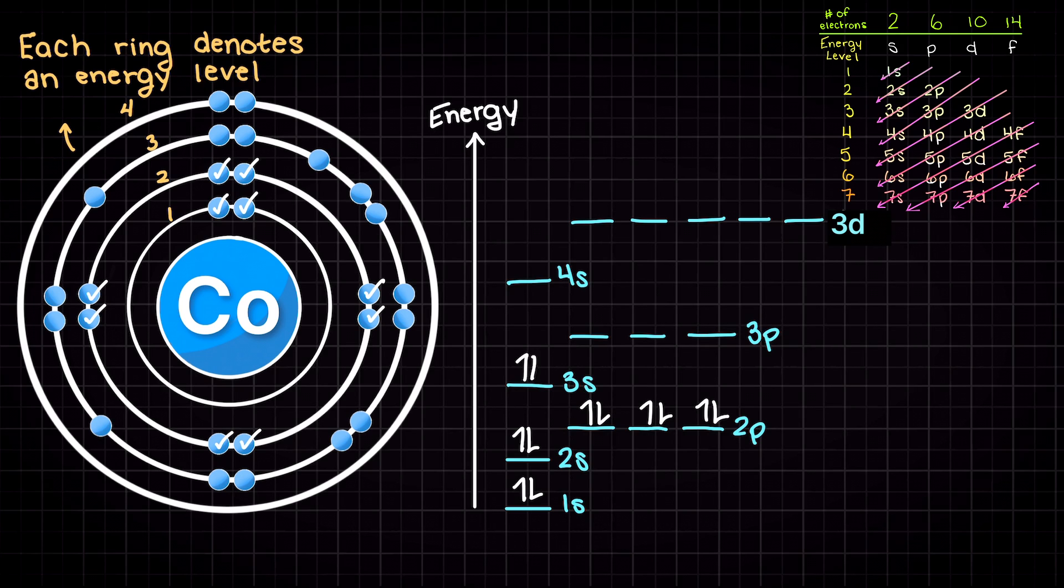Again following our energy level diagram, we see that we have the 3s subshell next, and because this is an s subshell, it can take 2 electrons, leaving us with 17 electrons. We then have another p orbital, which can again take 6 electrons.